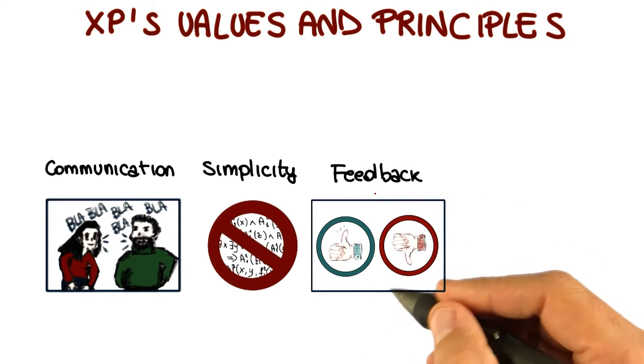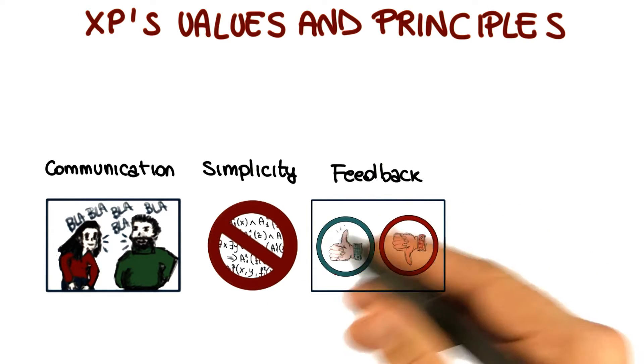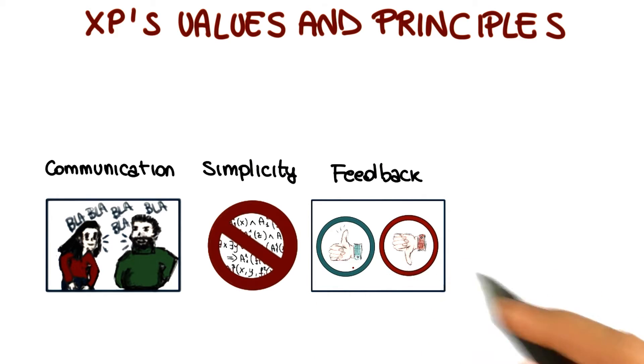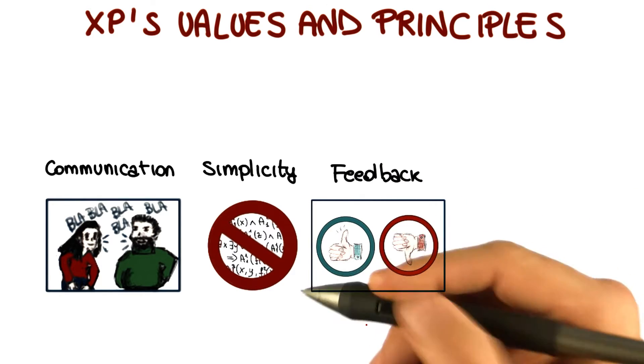Feedback, that's extremely important in XP. And it occurs at different levels and is used to drive changes. For example, developers write test cases, and that's immediate feedback. If your test cases fail, there's something wrong with the code, or there's something that you still haven't developed.